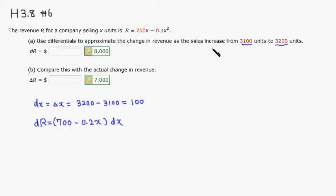In this case we just plug in 3100 for x, so this is the x value. What you get is 700 minus 0.2 times 3100 times dx. dx is 100.